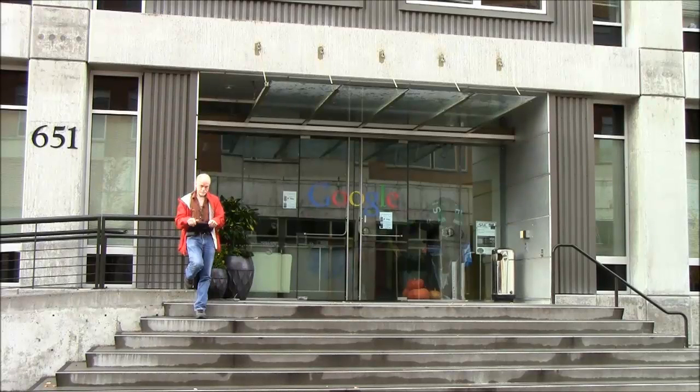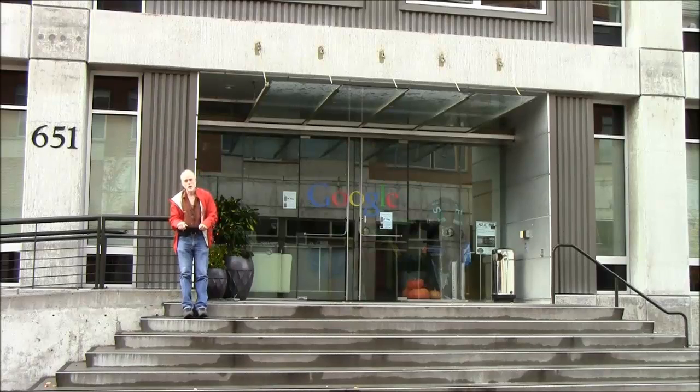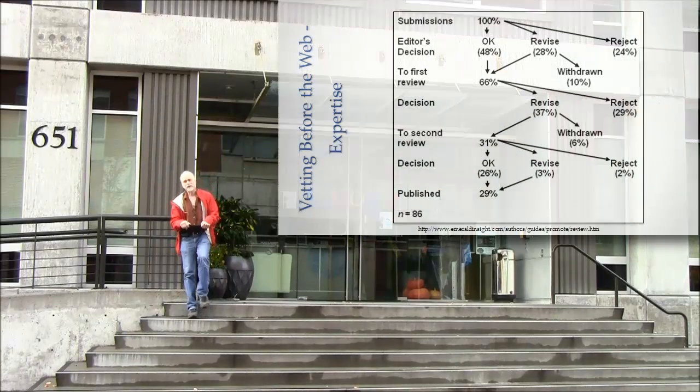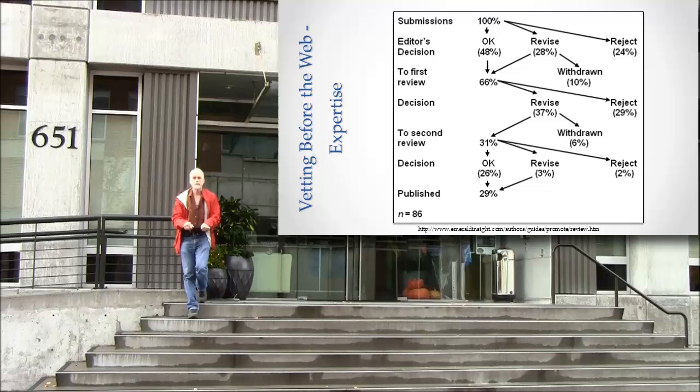Alright, now we're going to look at the old system of authority granting, specifically for published information. When I say published information, I mean information that's publicly available, like newspapers, books, magazines, etc., before the web.